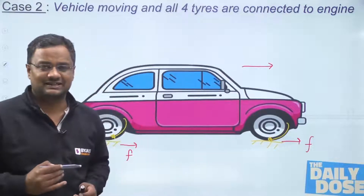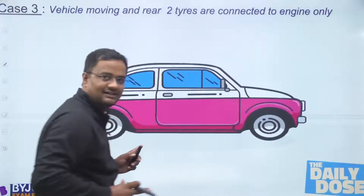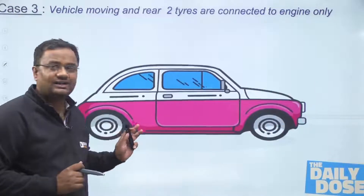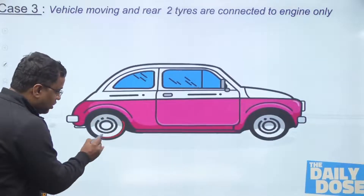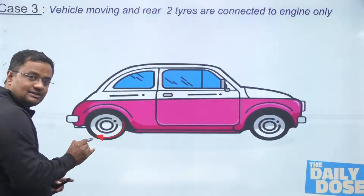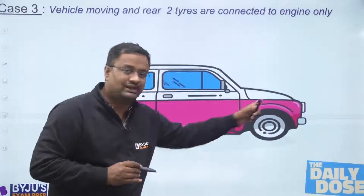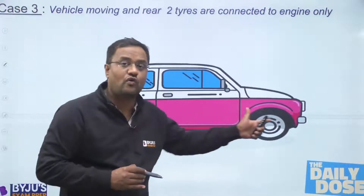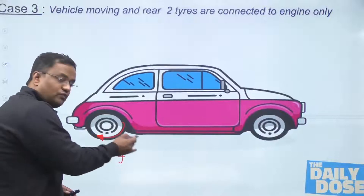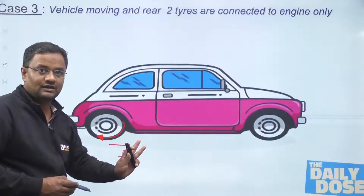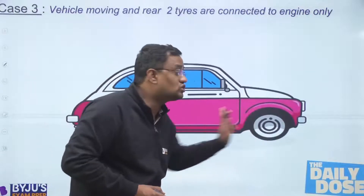Case three: the rear two tires are connected to the engine, but the front tires are not connected at all — they are moving only because the rear is pushing the vehicle forward. The rear tire has a torque causing rotation, so with respect to ground, its relative motion is backward, and friction is forward. The front tire has no engine connection — it is only rotating because the rear wheel is helping it move forward. So with respect to ground, the front tire's relative motion is also backward, and friction on it is also forward.